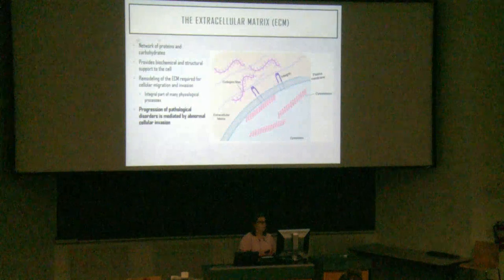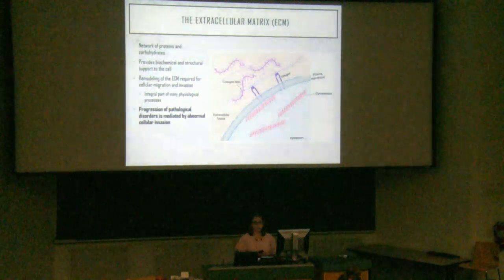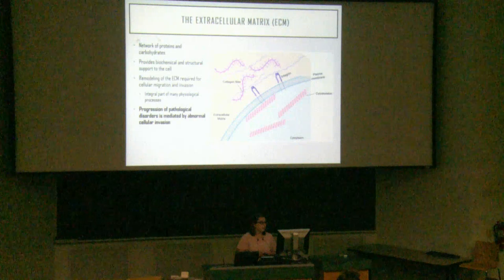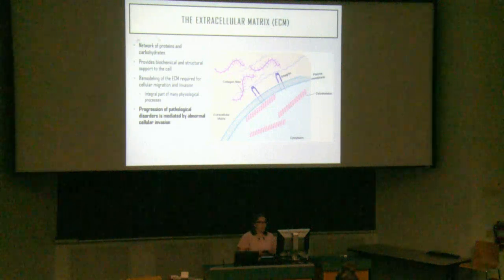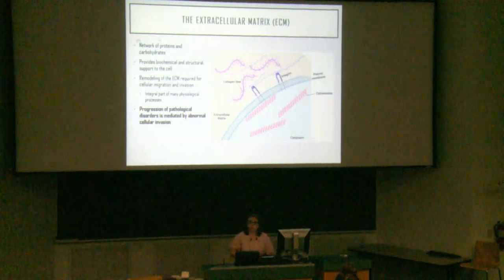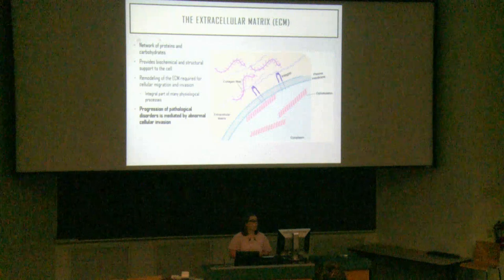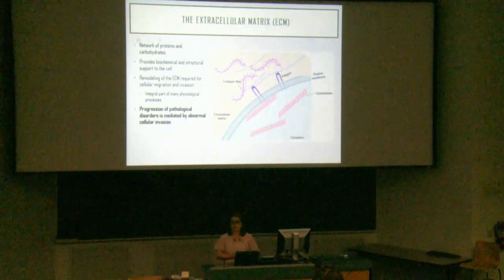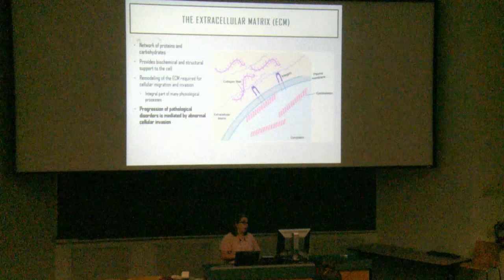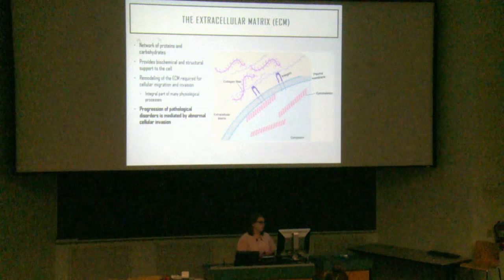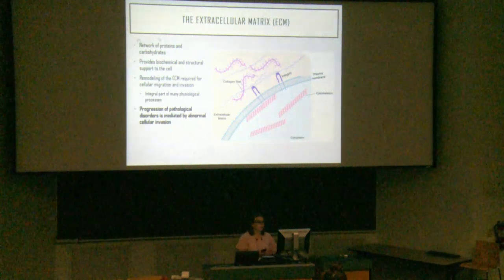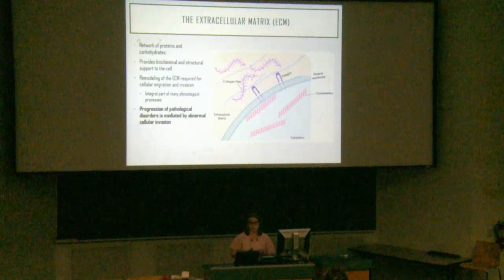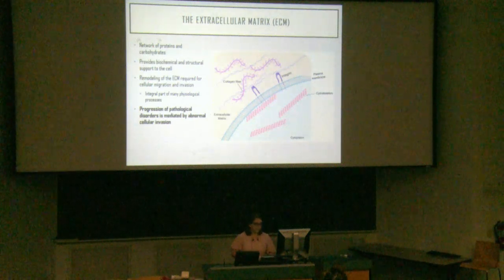The extracellular matrix is a network of proteins and carbohydrates that provides biochemical and structural support to the cell. Remodeling of the ECM is required for cellular migration and invasion and is integral to many physiological processes like maintenance of tissue architecture and embryogenesis. However, the progression of pathological disorders is mediated by abnormal cellular invasion — an example of this is cancer.